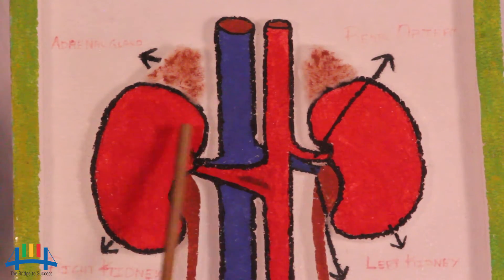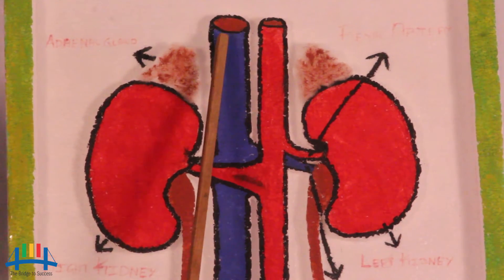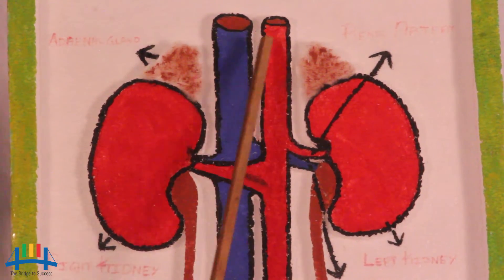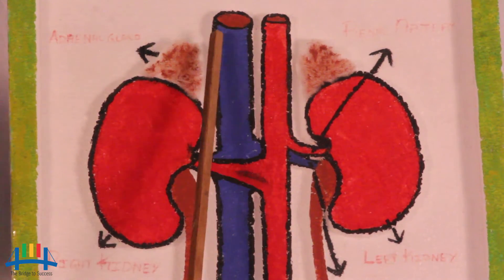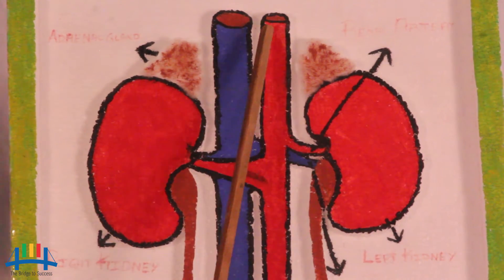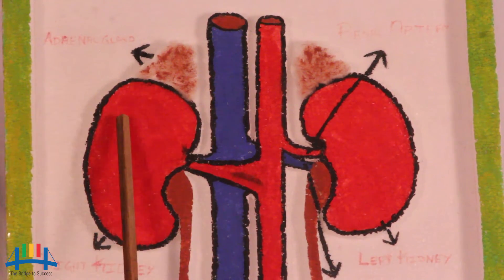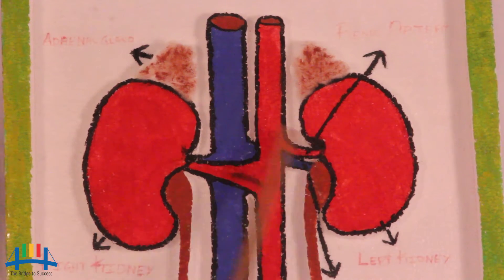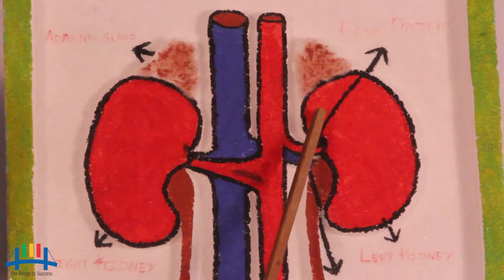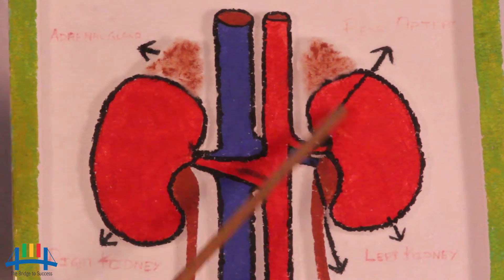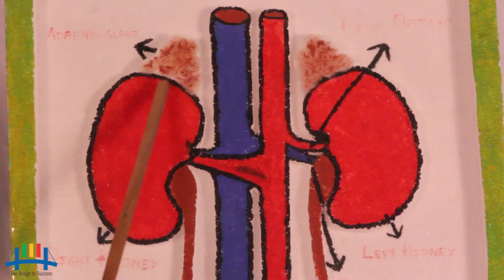Two kidneys are connected to both the renal vein and renal artery. The renal vein carries deoxygenated blood, and the renal artery carries oxygenated blood. Both blood vessels are connected to the right kidney and left kidney. Blood flows through both vessels into the kidneys, where the filtration process occurs.